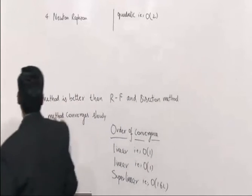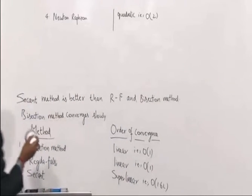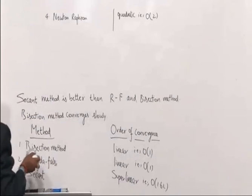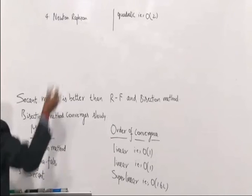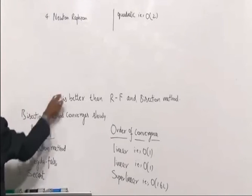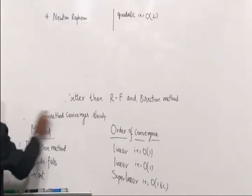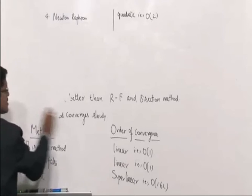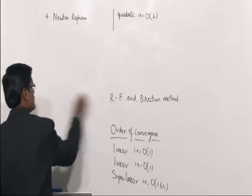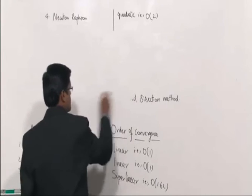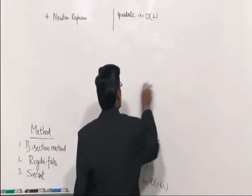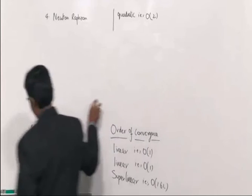Order of convergence is fastest in Newton-Raphson. Proofs are available but they are descriptive questions only — 8 marks or 60-mark questions only. But for GATE purposes, just memorize this order of convergence, because proofs are not included in GATE.